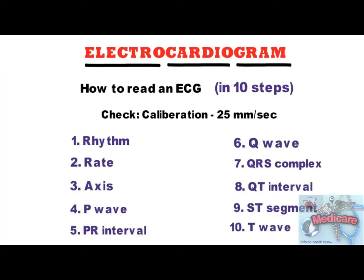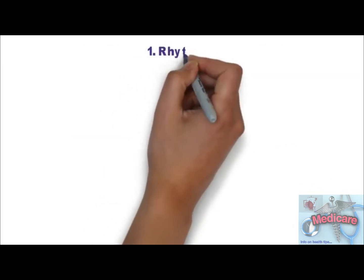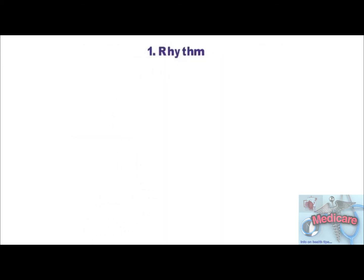In most books on ECG, the first step is to calculate rate. But before calculating the rate, you should know whether the rhythm is regular or not — I'll explain the reason when we discuss rate. We'll discuss ECG interpretation in this manner: Rhythm, Rate, Axis, P-Wave, PR Interval, Q-Wave, QRS Complex, QT Interval, ST Segment, and T-Wave. Now step 1 is Rhythm.